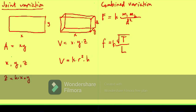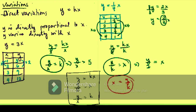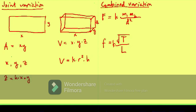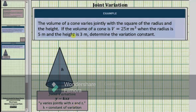Joint variation is very similar to direct variation, but now we're dealing with two or more variables. Combined variation combines direct, inverse, and joint variation together. Remember: if you hear 'directly proportional' or 'varies directly,' that is direct variation. If it's inversely proportional, then you have inverse variation. Joint is very similar to direct but involves more variables.